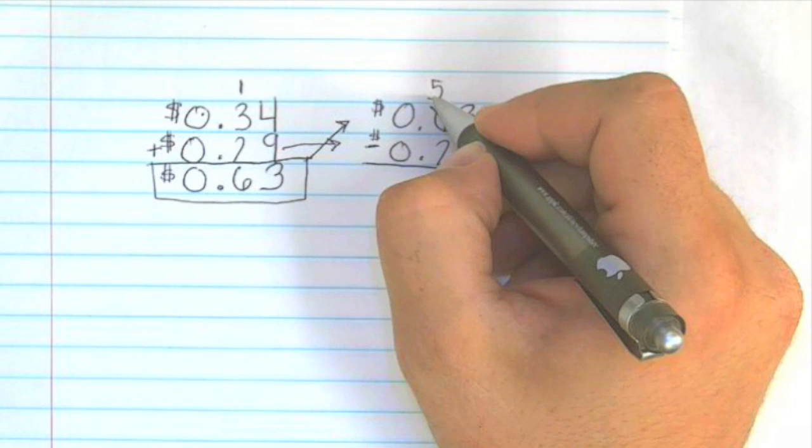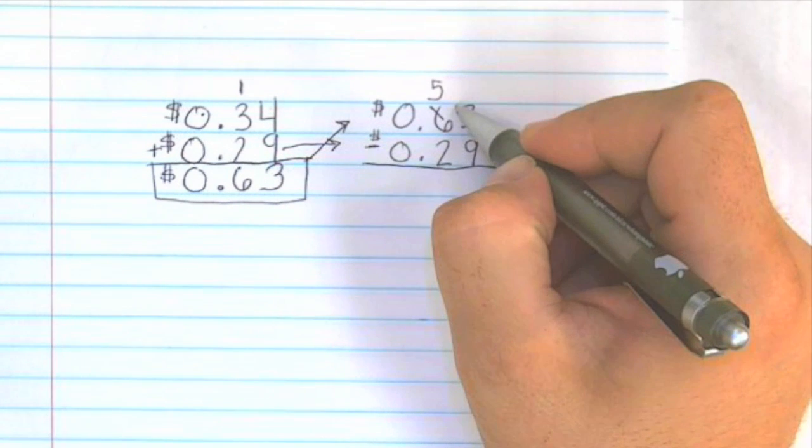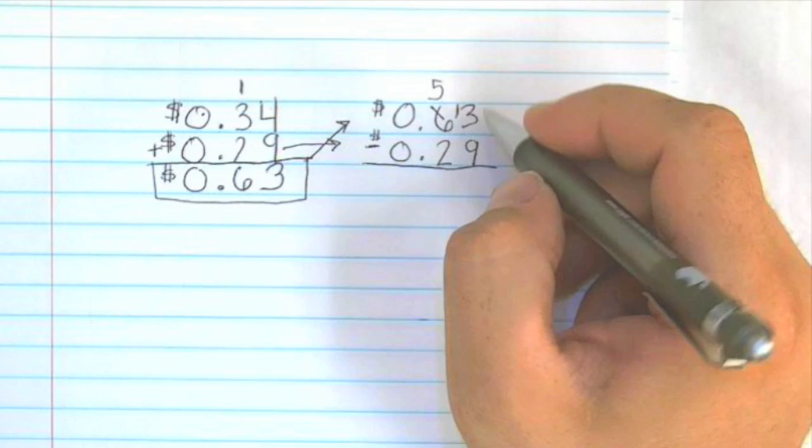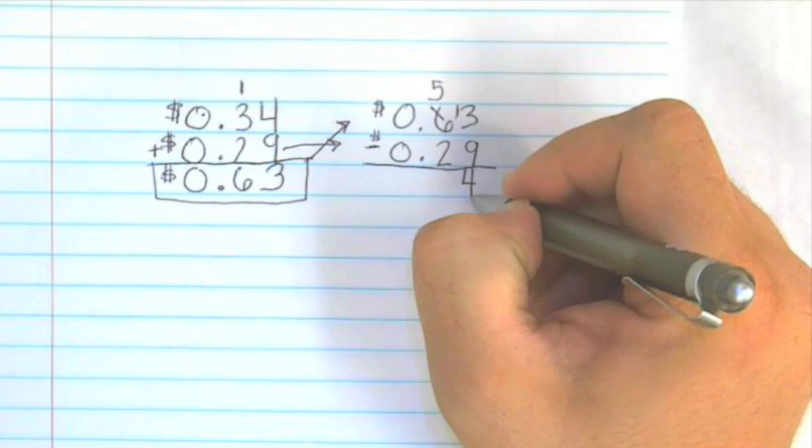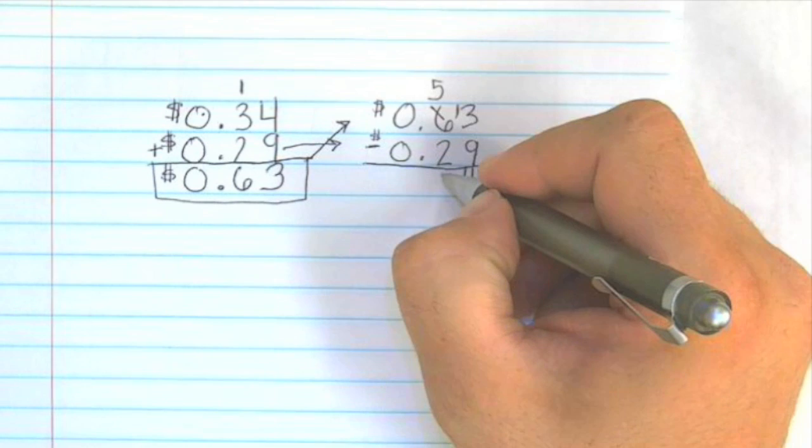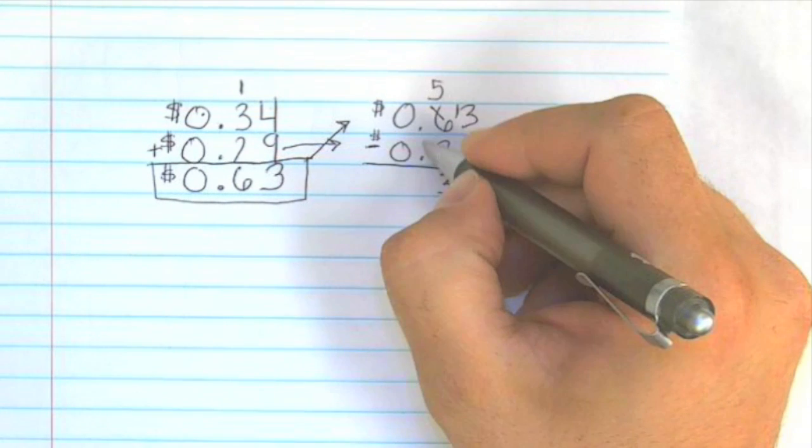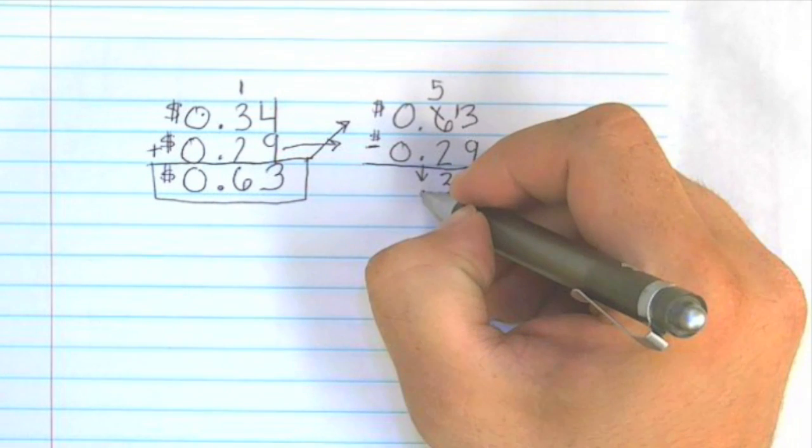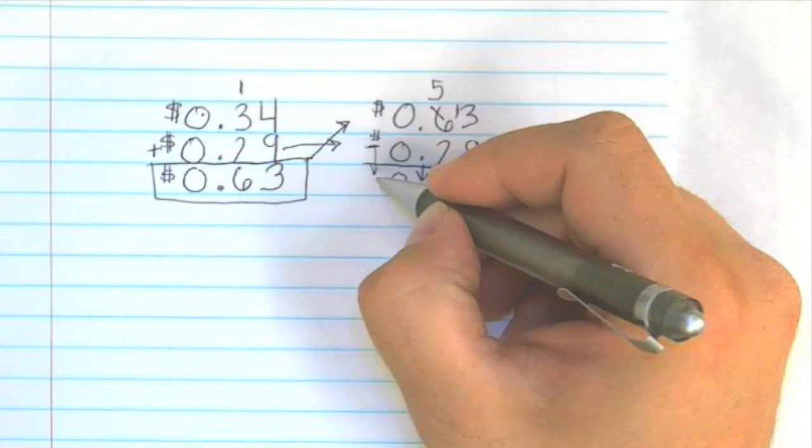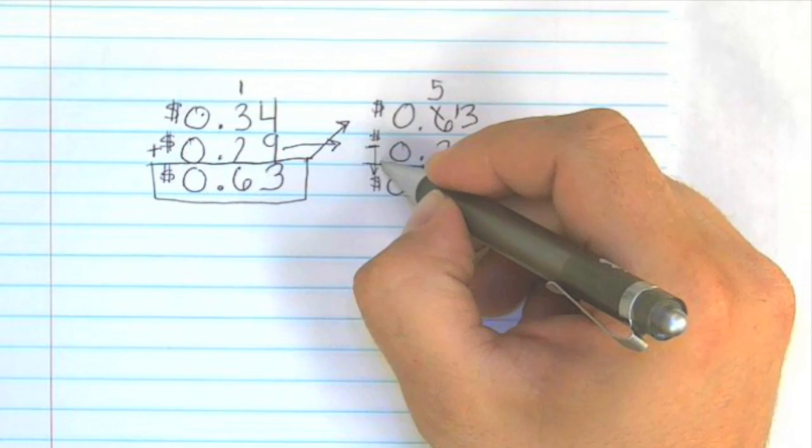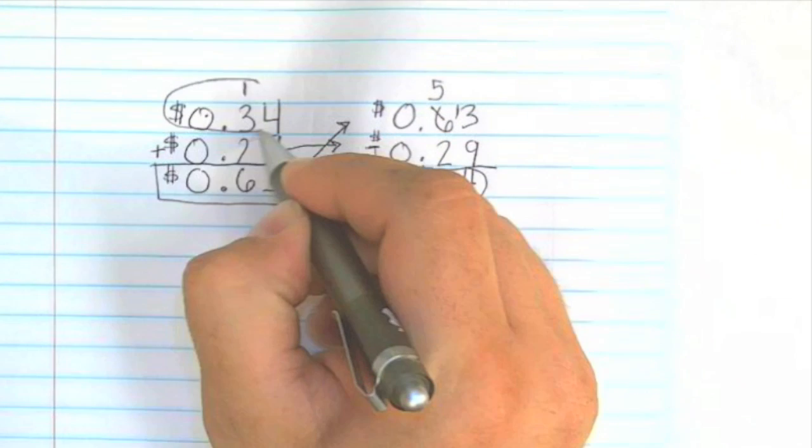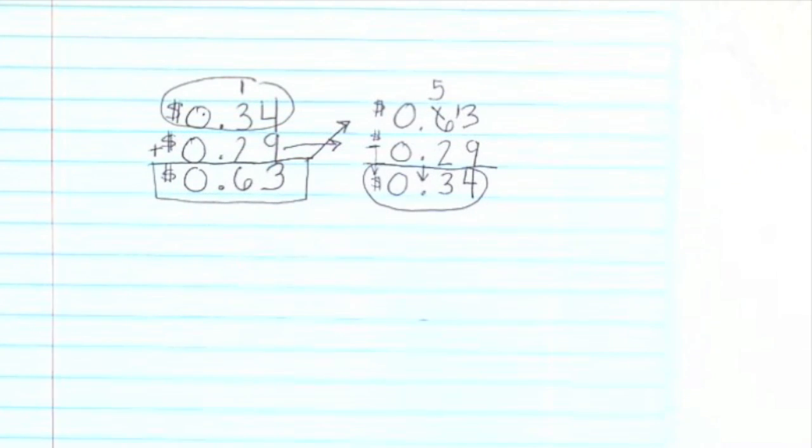So 3 minus 9 doesn't work, so I can borrow 1 from the 6. The 6 becomes a 5. This becomes 13. 13 minus 9 is 4. 5 subtract 2 is 3. We bring down that decimal point. 0 minus 0 is 0, and we bring down the dollar sign, and we have 34 cents, which is what we had up here on top, so our answer is correct.